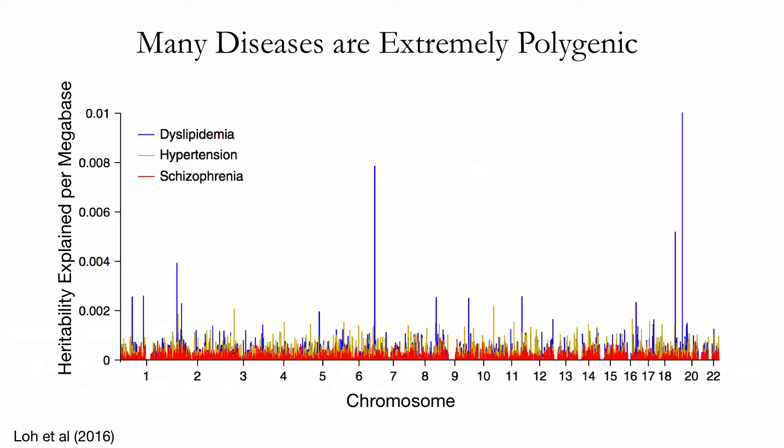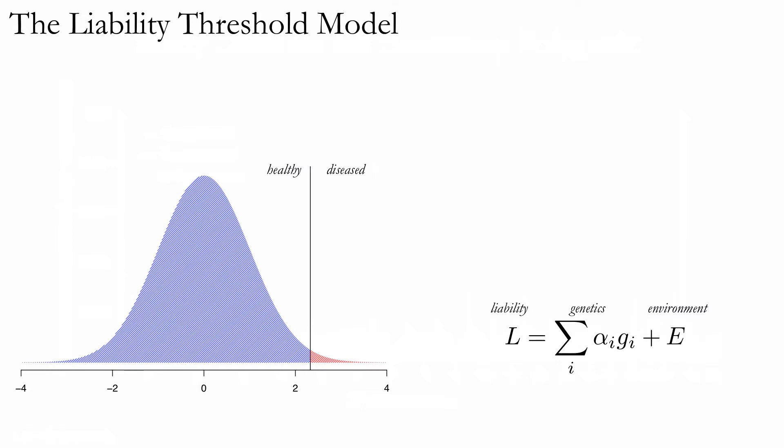I'd like to suggest that we can think about at least some of these highly polygenic diseases in terms of a generalized model of mutation selection balance. To that end, we can start from the way complex diseases are modeled in human genetics, often with the liability threshold model. The basic idea is that we posit some underlying, unobserved, continuous variable called liability. Each individual's liability derives from a combination of genetic and environmental factors which all combine additively. Individuals with liability above some threshold get the disease, while those below the threshold are healthy.